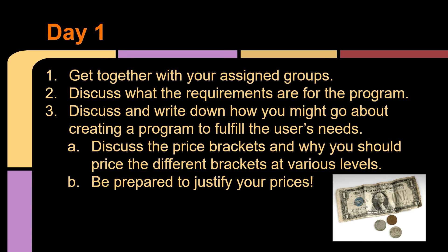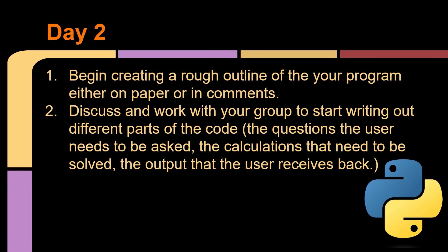On the first day of this assignment, get together with your assigned groups — those are available through this assignment in Canvas. Discuss what the requirements are for the program. Discuss and write down how you might go about creating a program to fulfill the user's needs. Discuss the price brackets and why you should price the different brackets at various levels, and be prepared to justify your answers. On day two, begin creating a rough outline of your program either on paper or in comments on Replit. Discuss and work with your group to start writing out different parts of the code — divide it up so someone handles the questions, someone figures out the calculations, and someone else figures out the output.